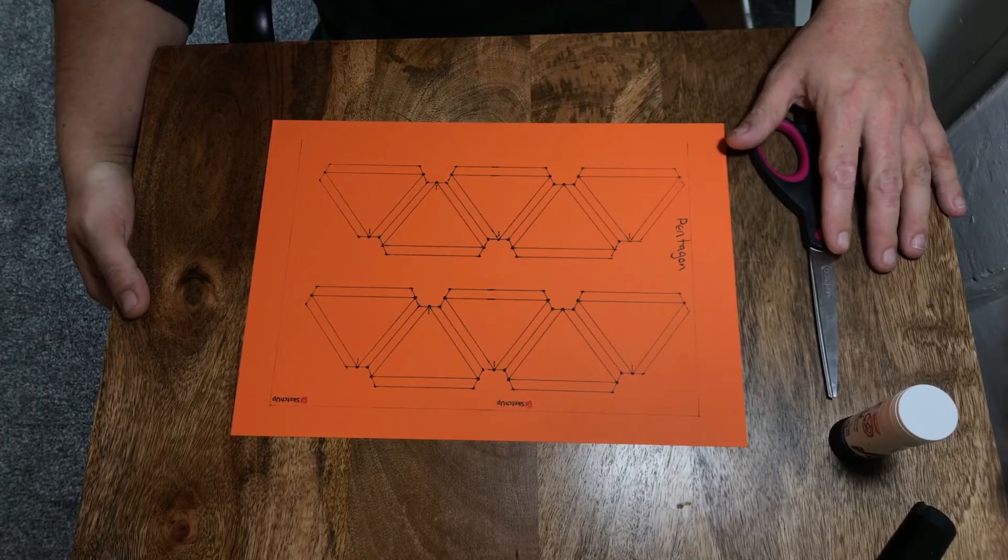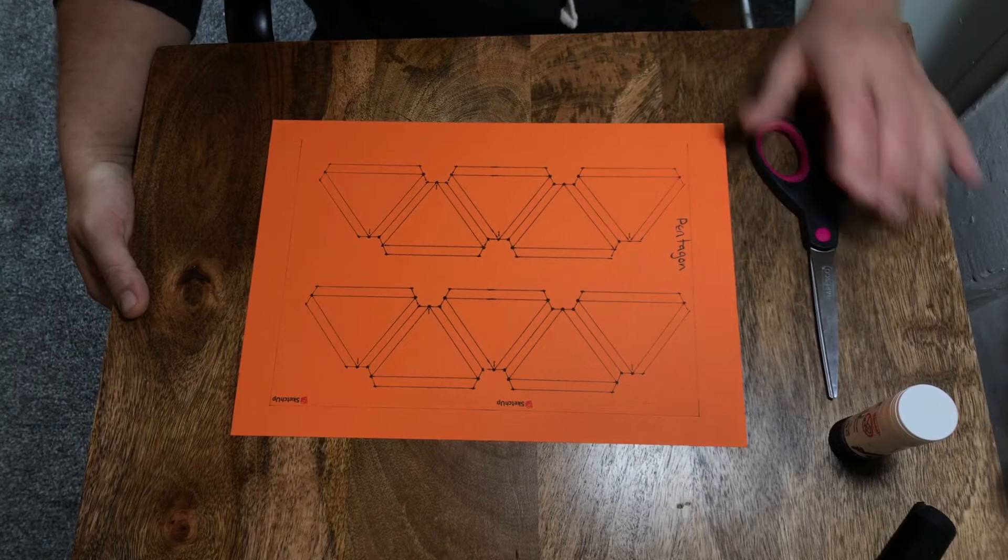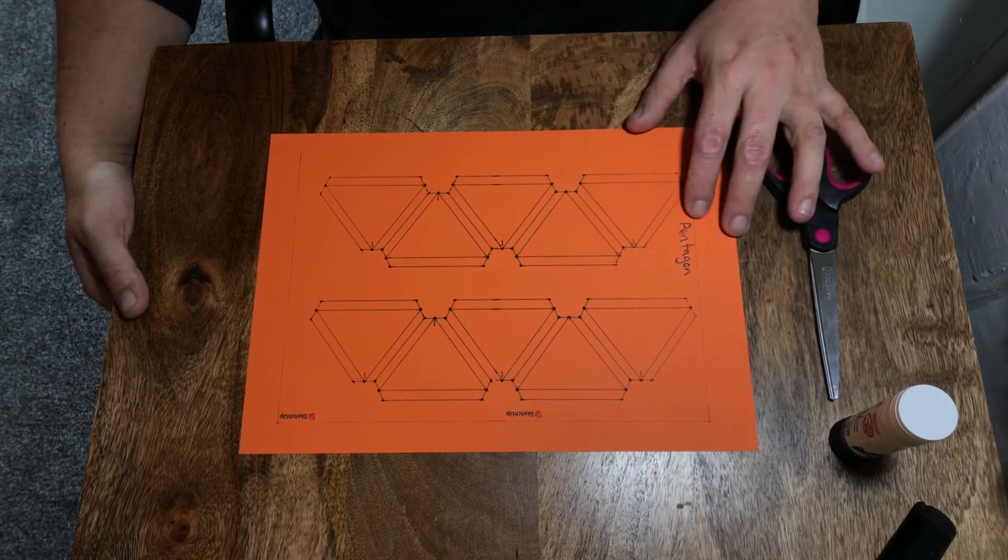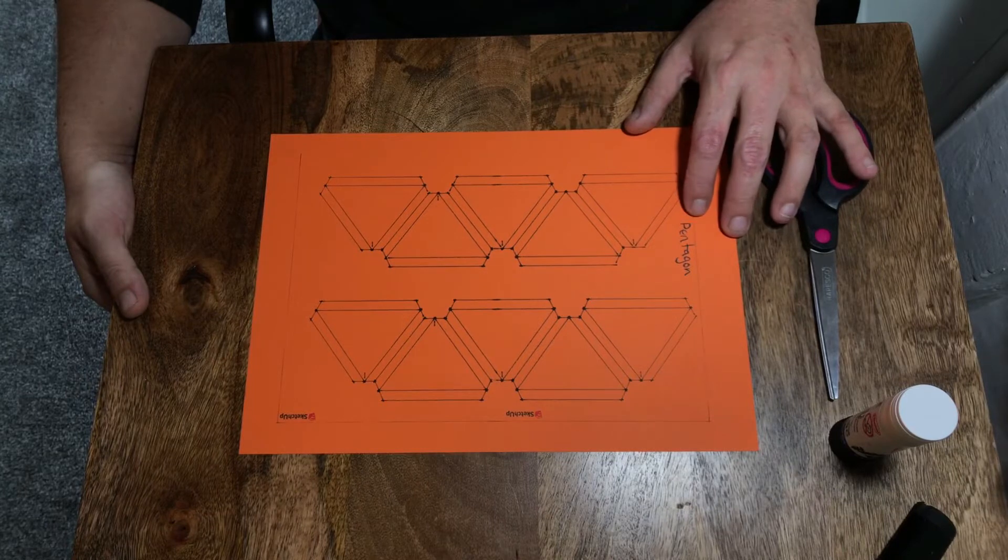So today we're going to be building a two frequency geodesic dome out of card. For this project you're going to need three pieces of card with the Pentagon markings on them.